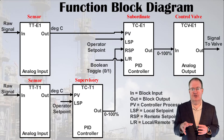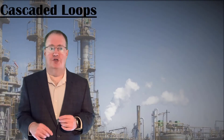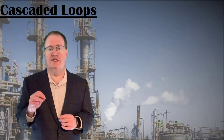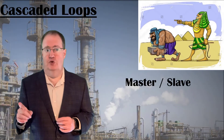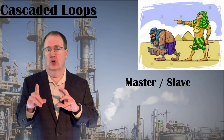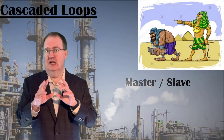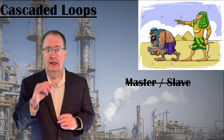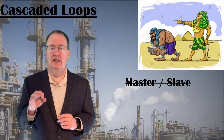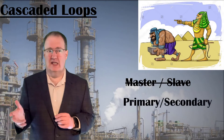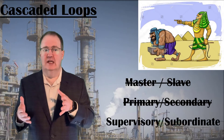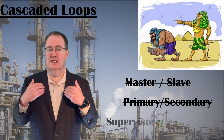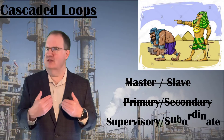A brief note on terminology. From the point they were introduced until recently, the two cascaded loops were referred to as the master and slave loops. Do we really need to reference human bondage to convey the meaning intended? Clearly, no. A lot of other sources currently use the labels primary loop and secondary loop, but I can never remember which is which. Supervisory and subordinate is my preferred terminology because it describes the design clearly.